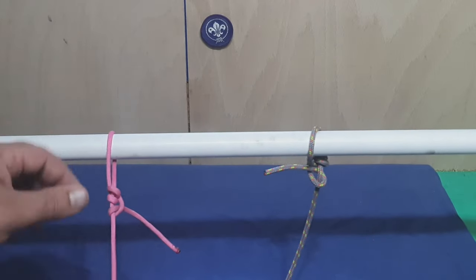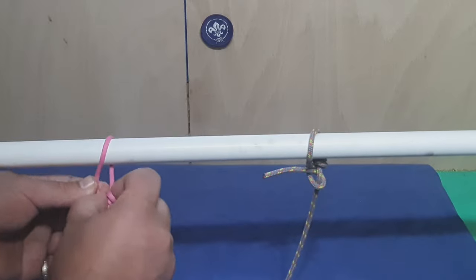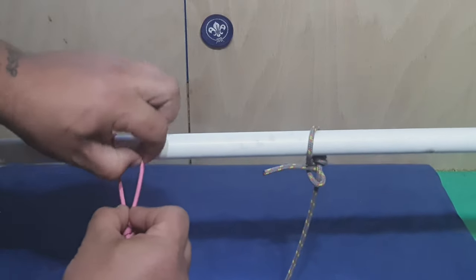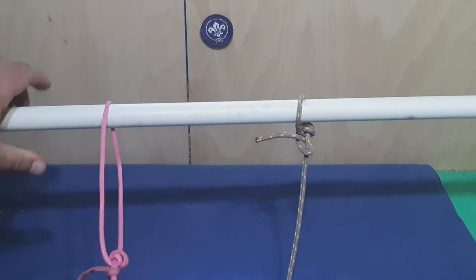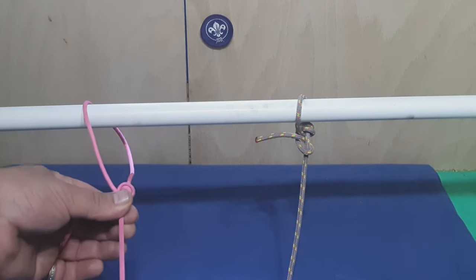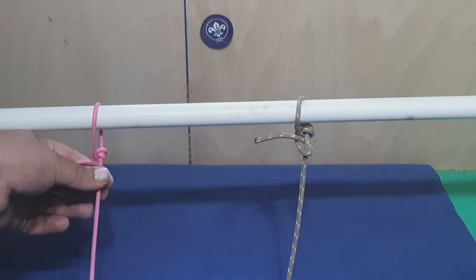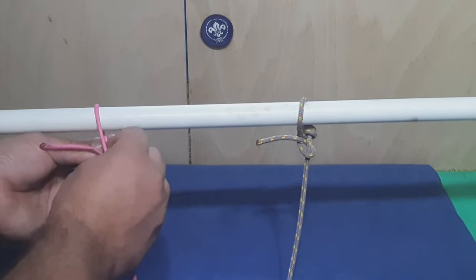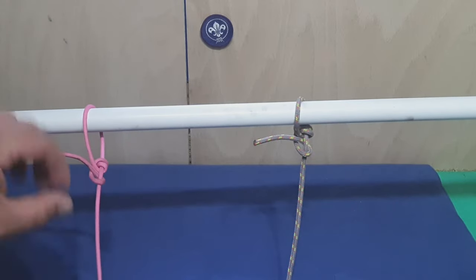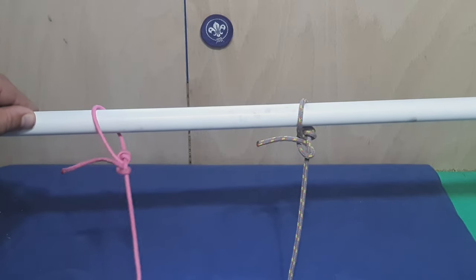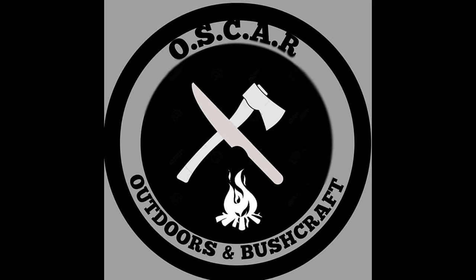Okay, so the Tautline Hitch. So yeah, the beauty of this is that it can be adjusted, but on this one you can get closer to your tent or tarp, and then you can also push away from it, tighten it up, giving you the tension that you need. But yeah, that's the Tautline Hitch. So yeah, thank you.